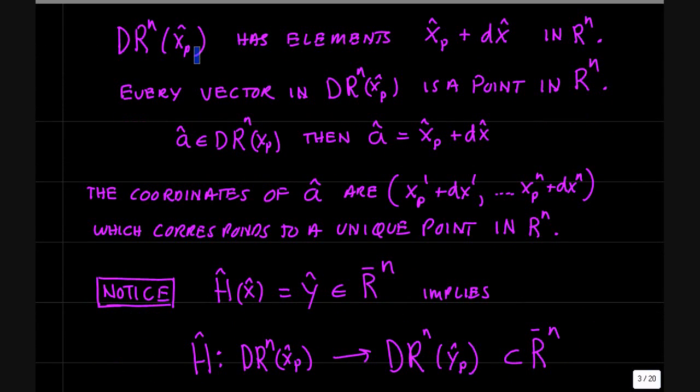Most of you have already seen this, but just as a refresher, the elements of the vector space are of the form x_p plus dx, and x_p is serving as the zero vector of the vector space DR^n at x_p.